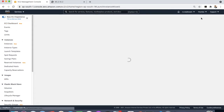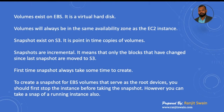Volumes exist on EBS — it is a virtual hard disk. Volumes will always be in the same availability zone as the EC2 instance. That means the EC2 instance and the volumes cannot be kept in different availability zones. Once you create the EC2 instance, the volume should be kept in the same availability zone.